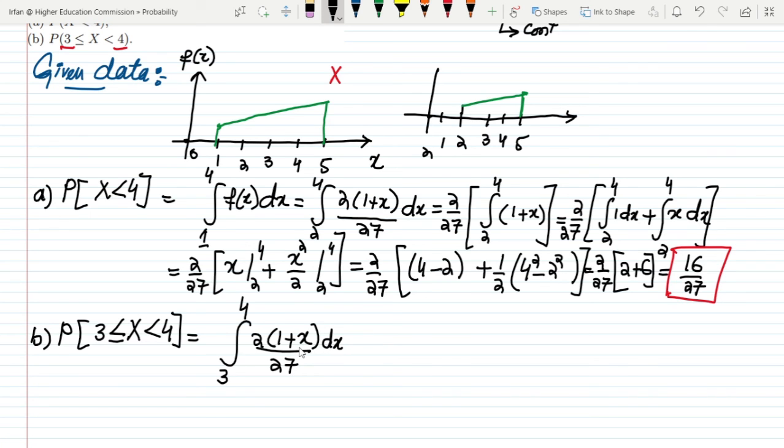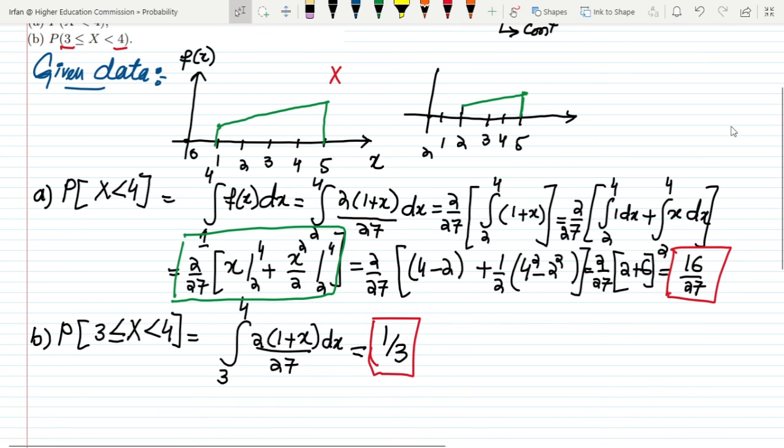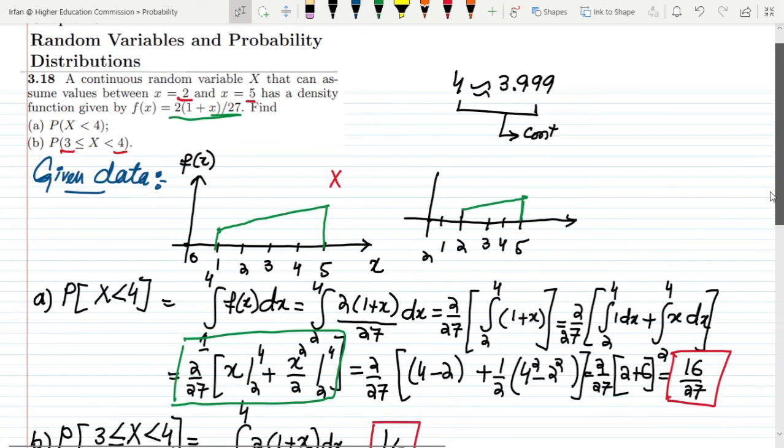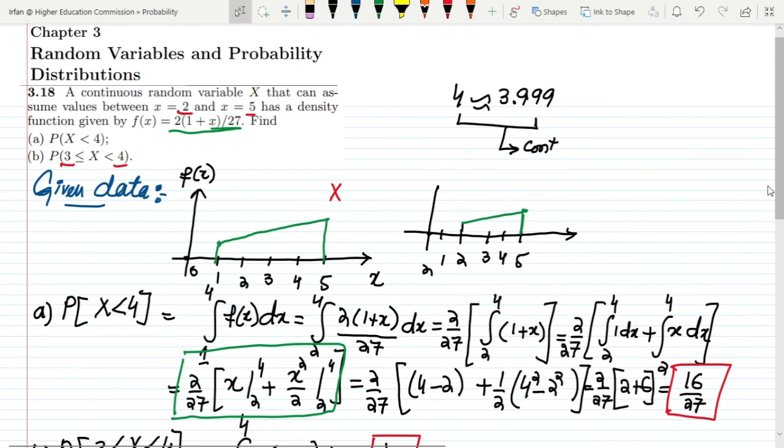Again, using the same function which we had done previously, the answer or the solution of it will be like this one, while the limits will change. By solving it like this one, what will you get? You will get the answer of it, which is 1/3. So the answer of it, by solving it and putting all these values, you will get 1/3. That is the solution of question 3.18. If you have any question, you can ask me in the comment box. See you soon.